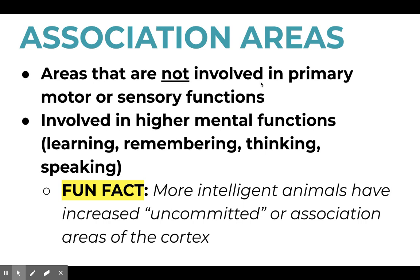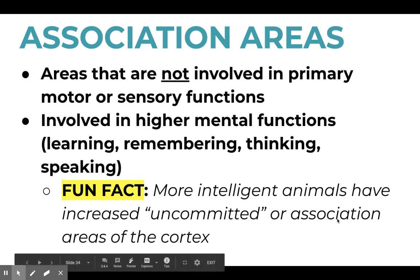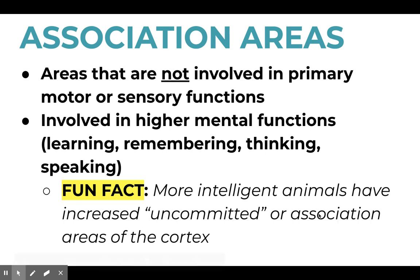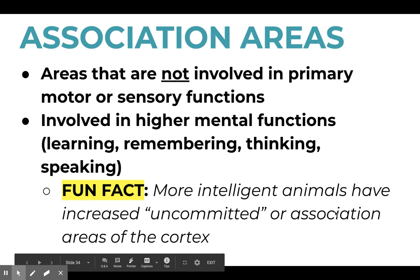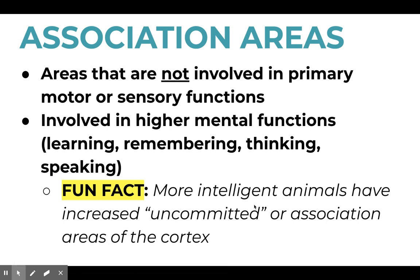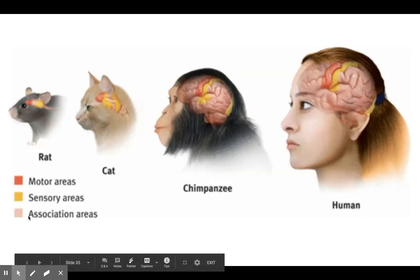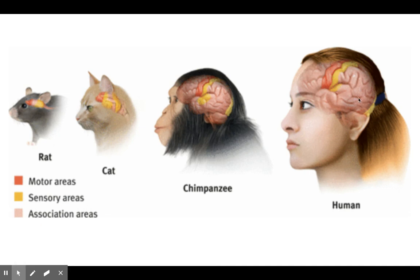Then we have these cool things called association areas. These are not involved in primary motor or sensory functions like the occipital lobe and the sensory cortexes, but they help with higher mental functions like learning, remembering, thinking, and speaking. The more and larger association areas you have tends to mean that you are a more advanced species. A fun fact is more intelligent animals have increased uncommitted, or association, areas of the cortex. For example, a human — as you can see — has a lot of association areas shown in pink. We are considered a more evolved and advanced species, able to do things like feel, remember, and speak.